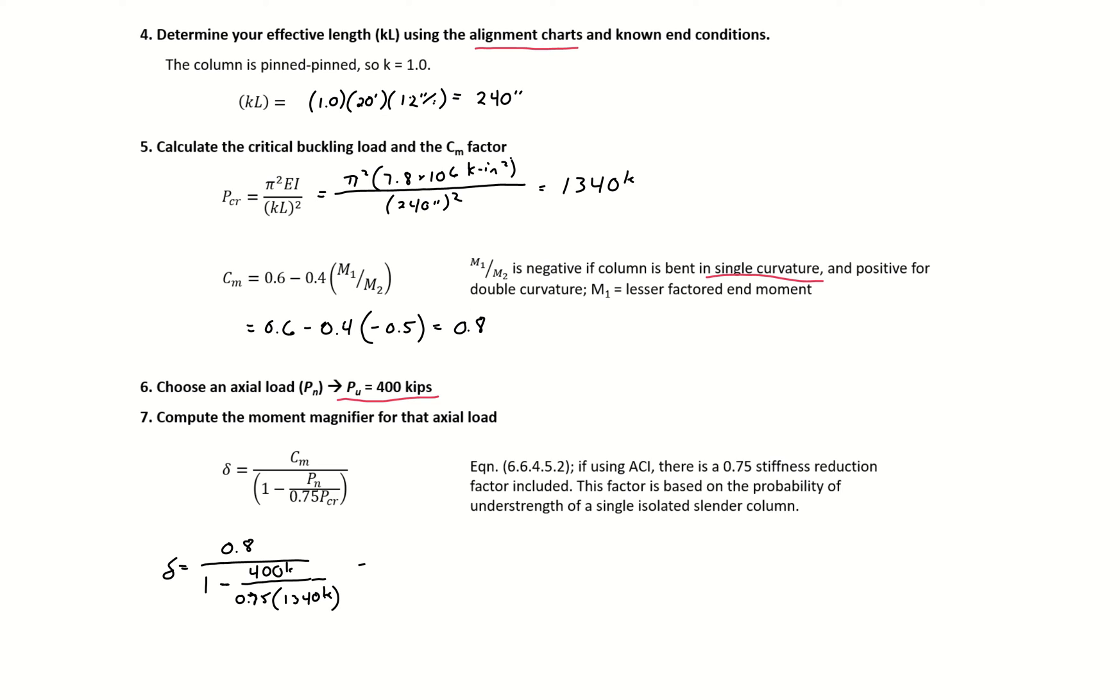This gives us a moment magnifier of 1.33. Note that we're using our factored expressions, so we're including a 0.75 stiffness reduction factor. This factor is based on the probability of understrength of a single isolated slender column. That gives us our moment magnifier, which we'll use to magnify our applied moment.